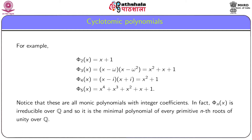Since there are only two primitive third roots of unity, namely ω and ω², the third cyclotomic polynomial is φ_3(x) = (x − ω)(x − ω²) = x² + x + 1. The fourth cyclotomic polynomial is φ_4(x) = (x − i)(x + i) = x² + 1. The fifth cyclotomic polynomial is φ_5(x) = x⁴ + x³ + x² + x + 1.